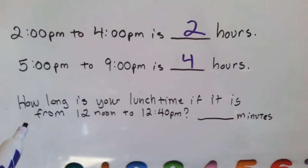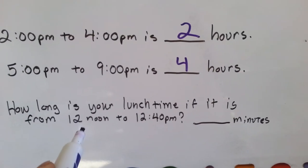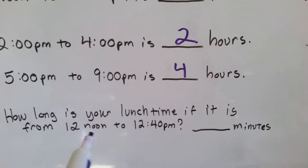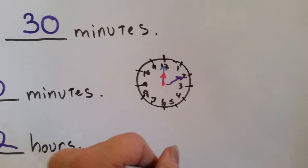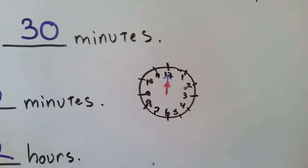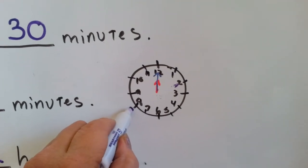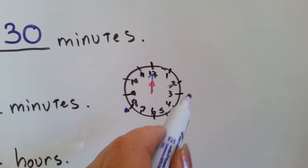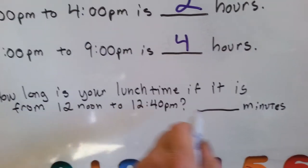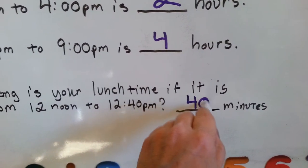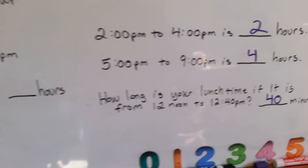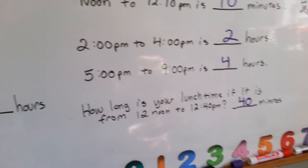How about this? How long is your lunch time if it is from 12 noon to 12:40 p.m.? How many minutes is your lunch? Well, if it goes from 12 noon to 12:40, here's the 40. It started at the 12 and it went 5, 10, 15, 20, 25, 30, 35, 40. From 12 noon until 12:40 p.m. is 40 minutes for your lunch. Your lunch might be longer or shorter than that at school, but that's how long it is on our word problem.